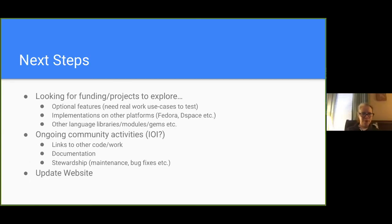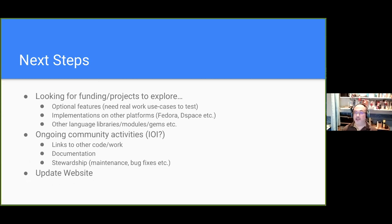In terms of next steps, we're looking for opportunities to update SWORD implementations in other repository platforms, and also looking for funding and projects interested in automated deposit into things like Fedora, DSpace, Zenodo, and InvenioRDM. We're updating the website, getting documentation sorted out, and we are looking for a long-term home for SWORD — it doesn't have a proper owner or anything like that, it's a floating standard, and we're interested in finding a more permanent organisational home for it.